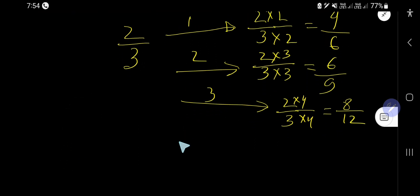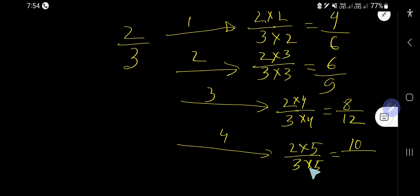And now this is the fourth equivalent fraction. You need to multiply by 5. So you are getting here 10 over 15.